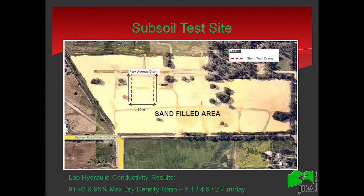This is the subsoil test site. The pale yellow area has been sand-filled. However, for the sake of this investigation, we will be focusing on the area delimited by the two subsoil drains. The subsoil drains are 80 meters apart and are aligned from south to north, discharging to the park drainage. As part of our investigation, we conducted lab hydraulic conductivity tests on the sand, which returned a value ranging between 5 and 2 meters per day. So we have a reference — the calibrated model value shouldn't be much more than 50% away from these values.